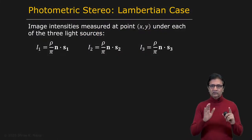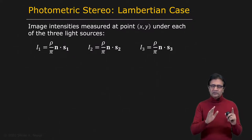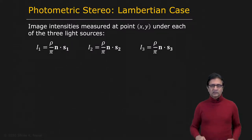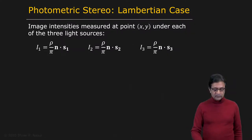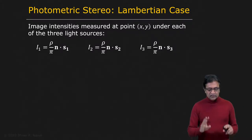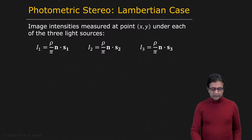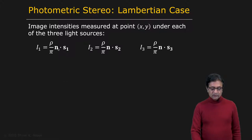Let's move away from the reflectance map representation and write out the expressions for image intensities created by multiple light sources in the Lambertian case. Let's say we use three light sources. For the first light source, at any given point with unit surface normal n, we assume the source direction of the first source is S1.